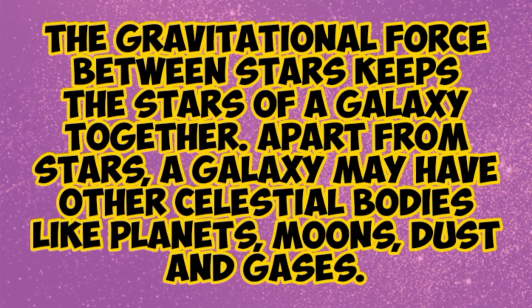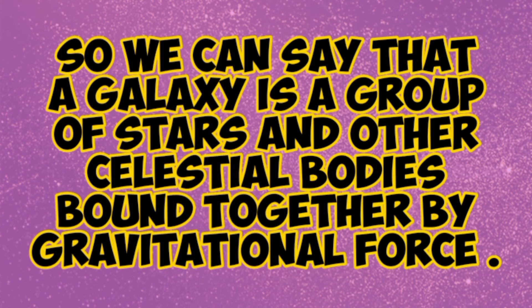There are three types of galaxies, which we will discuss in our next video. The names are: number one, spiral galaxies; number two, elliptical galaxies; and number three, irregular galaxies. We will go into detail on these in the next video.